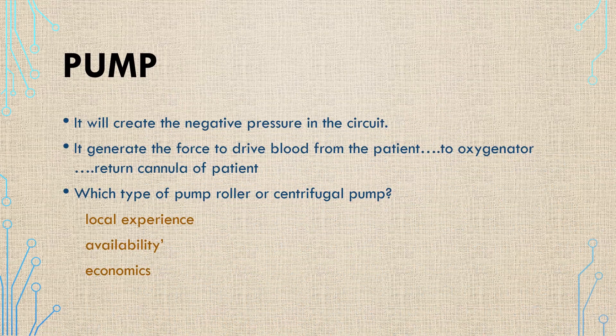The pump works by creating negative pressure in the circuit, which generates the force driving blood from the patient through the oxygenator and back to the patient. The type of pump used — roller pump or centrifuge pump — depends on local experience, availability, and economics.